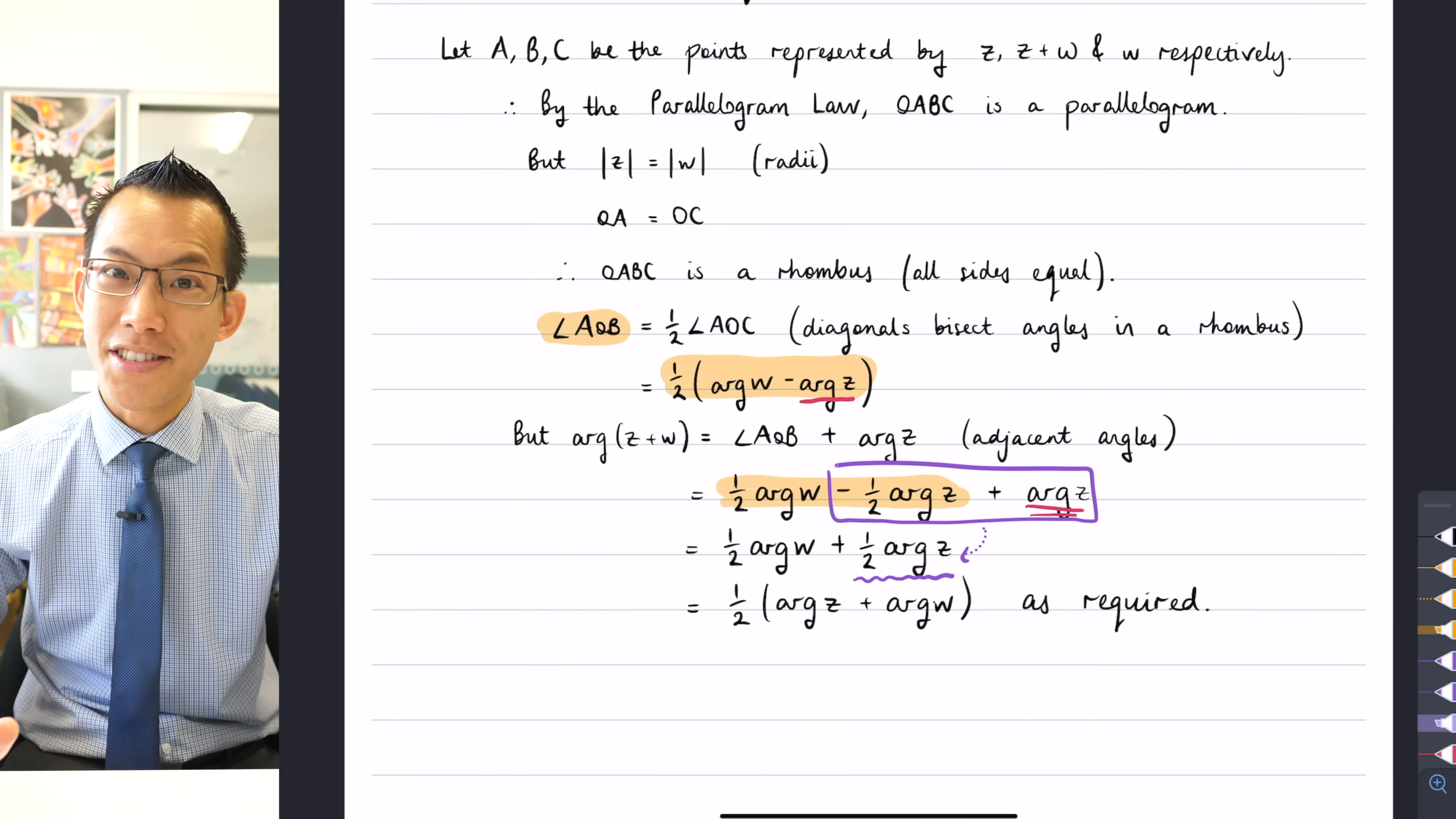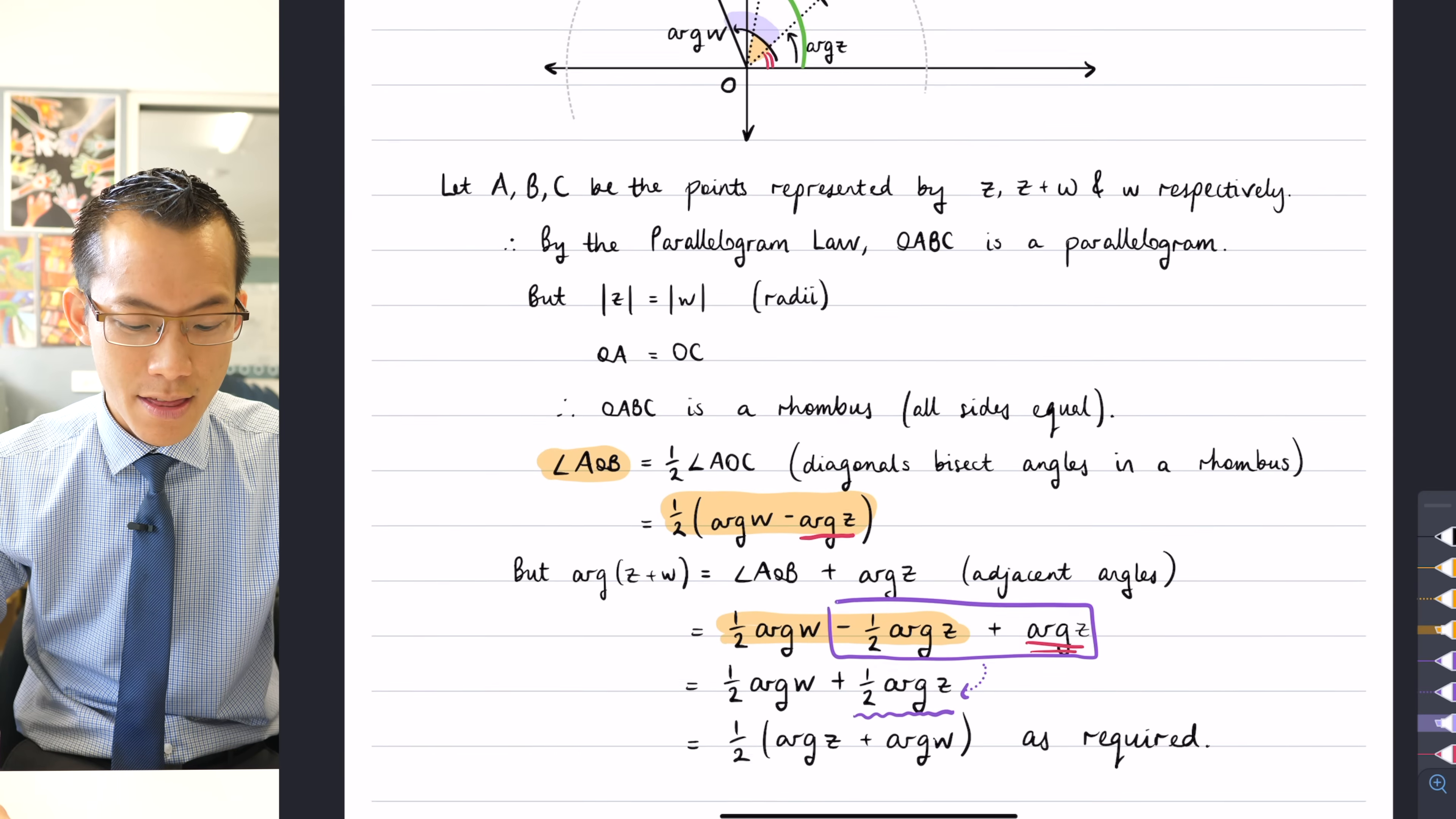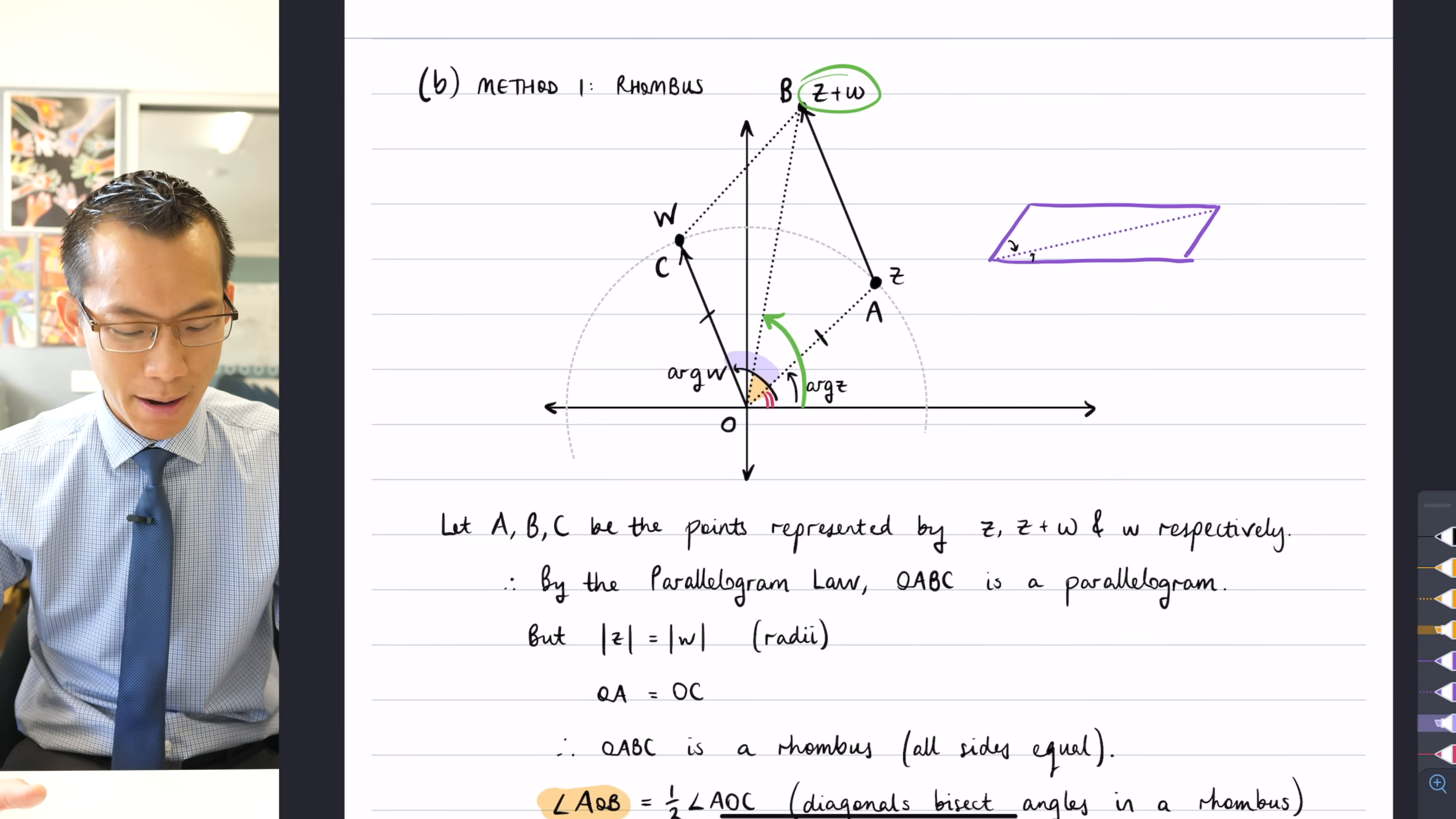So as promised, this is not the only way to solve this question, as is often the case with geometry problems. We've got many different techniques, many different pathways through this question. So the solution I'm bound to show you is not as neat and succinct as this one, but often the first solution you come up with is not the most efficient path. And that doesn't mean it's wrong. It just means it'll take you a little bit longer. So let's have a look at method two.